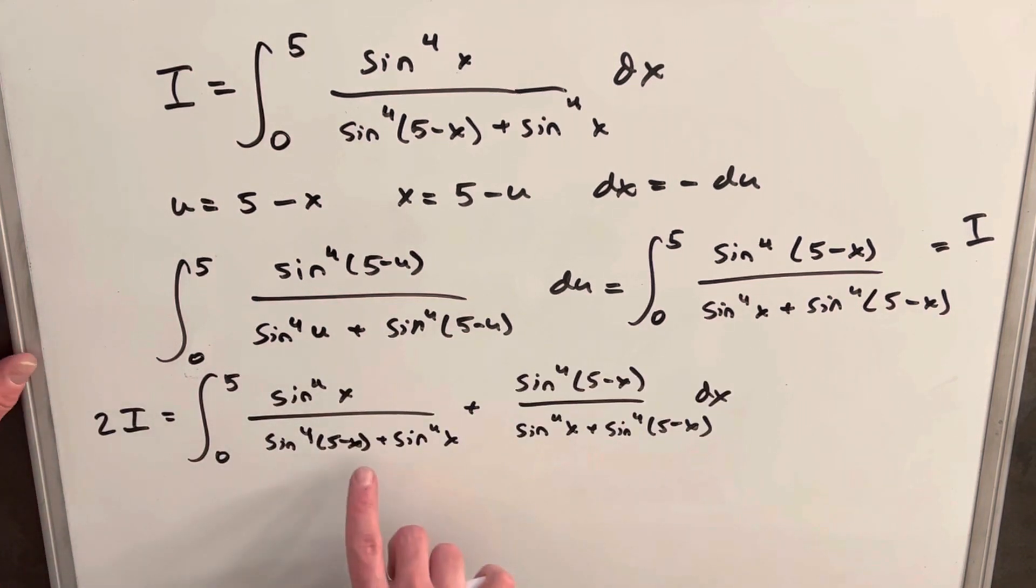Okay, so now I've just rewritten our two copies. And the thing to notice is, okay, so now because we're all x, we can put it under one integral. Okay, because we're adding and we have everything x. And then we notice because we have the same denominator, we can just add our numerators together. But when we do that, notice that what we have here is in the numerator, we're going to have the exact same thing. Sine 4x plus sine 4, 5 minus x, and that's exactly what we have here.